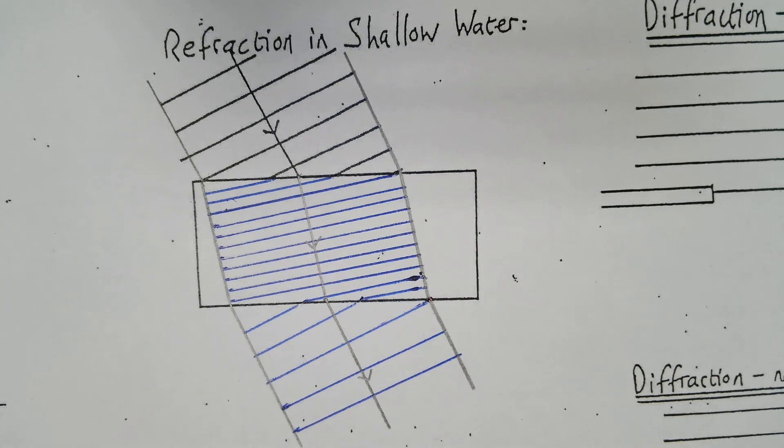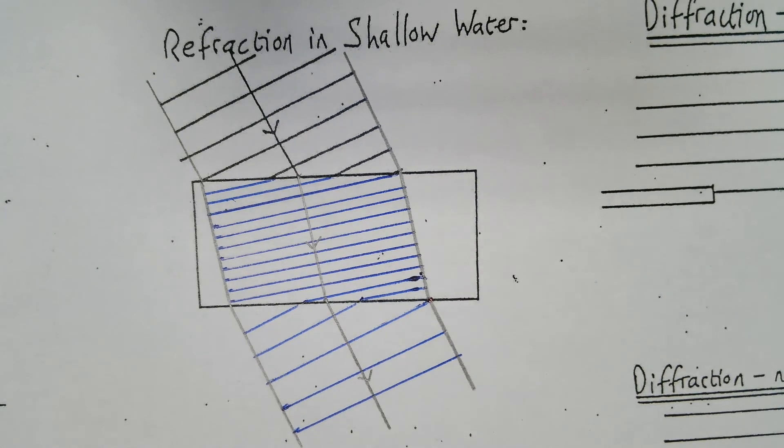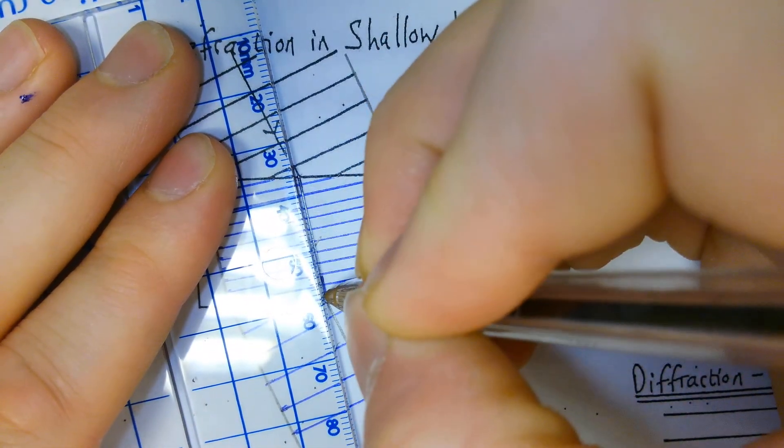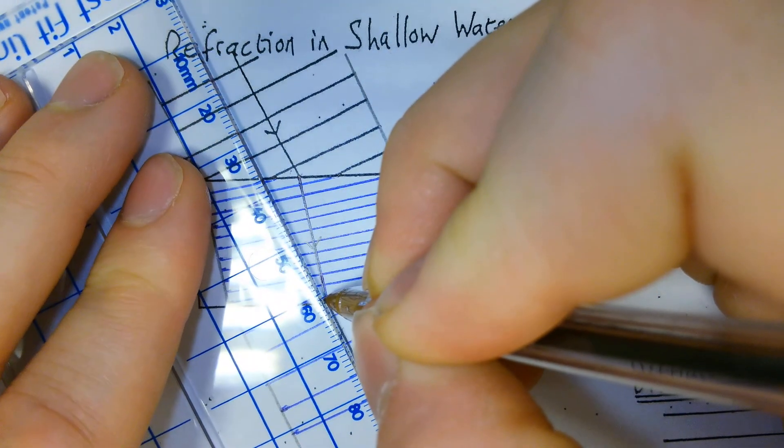So, that is a perfect diagram, I don't say myself, for refraction and shallow water. Just be careful, though. Just remember that I'm going to trace over that in a pen because I want to keep these lines.